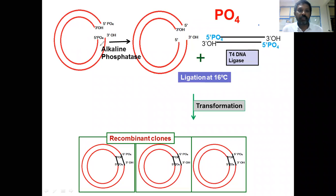In this process, the linearized vector is subjected to dephosphorylation by alkaline phosphatase. Alkaline phosphatase removes the phosphate groups from the 5' prime of the linearized vector.